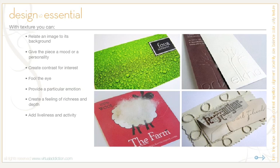Things you can do with texture: you can relate an image to its background — for instance, you could run a floral pattern around a photo of an elegant floral picture frame. You could give the piece a mood or personality — a piece done on soft textured paper gives the feeling of warmth. You could create contrast for interest by running a solid color around a very textured photo or illustration or around a block of copy.